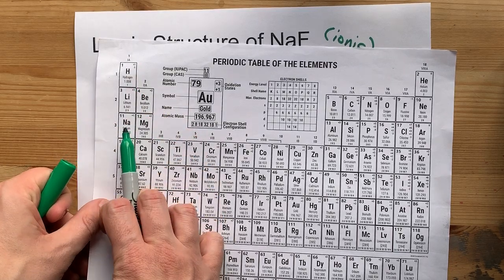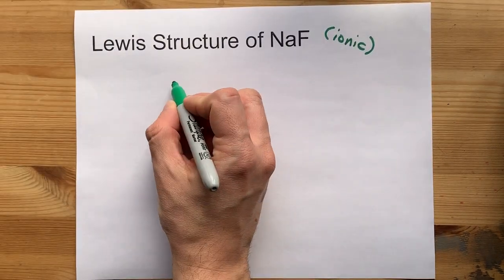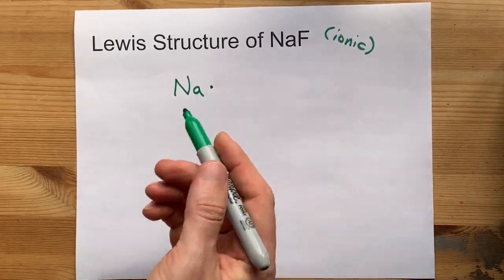Sodium is in group one, and so brings one valence electron with it. There we go, I drew it.